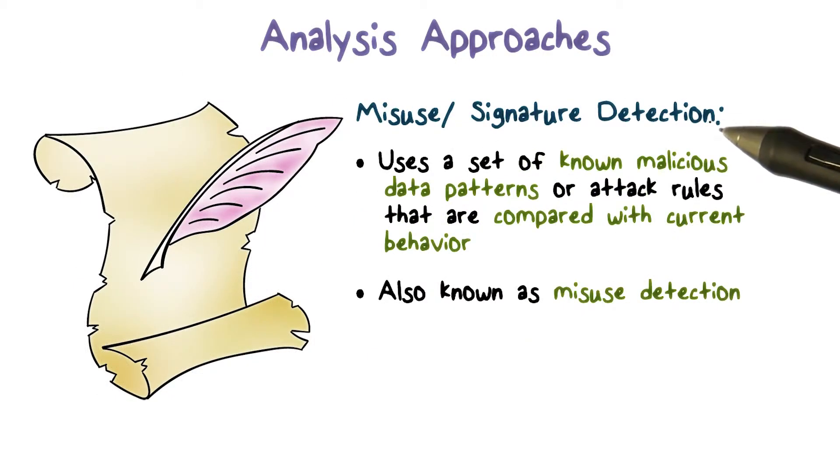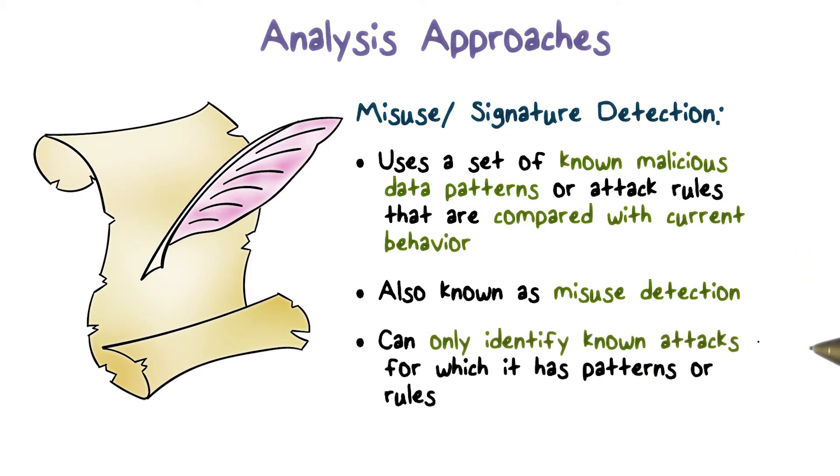Misuse or signature detection involves first encoding known attacks into patterns or rules, and then comparing the current behavior with these rules or patterns to see whether there's a match. Obviously, this approach can only detect known intrusions or known attacks.